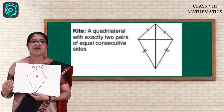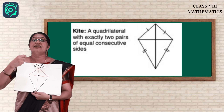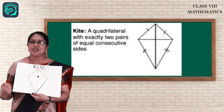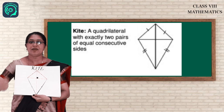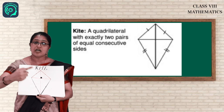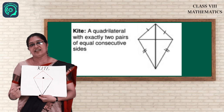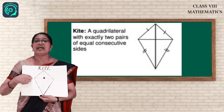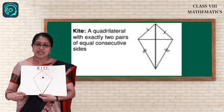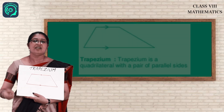Next quadrilateral — kite! Look at the shape. What makes it special? Consecutive sides are equal. Consecutive sides means the near sides — one pair of near sides are of equal measure and the other pair of near sides are also of equal measure. There is also a speciality of the diagonals: one diagonal is bigger and the other is smaller. The bigger diagonal bisects the smaller diagonal — it cuts the smaller diagonal into two equal parts.